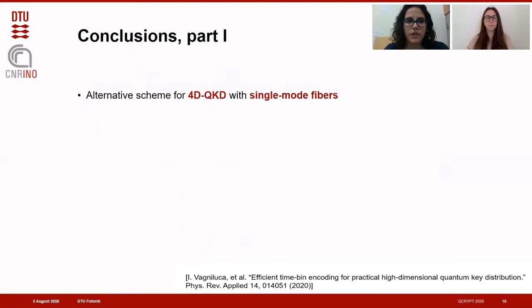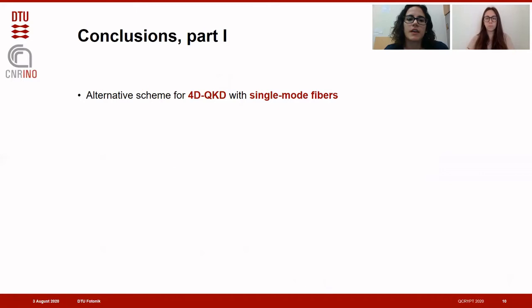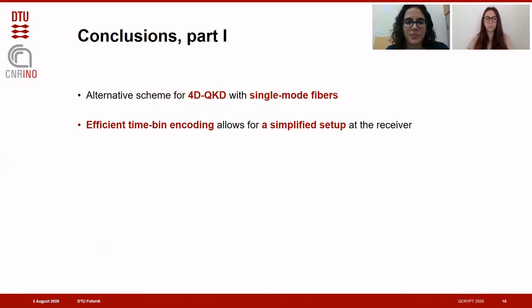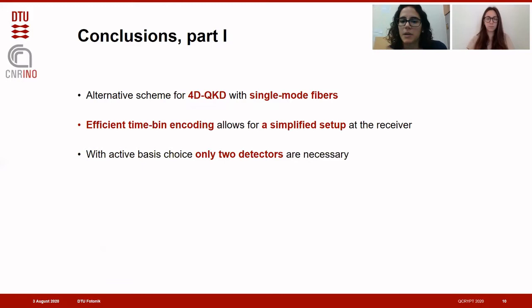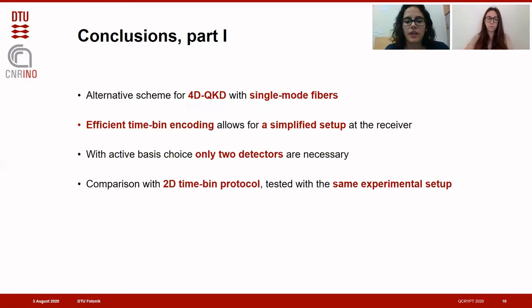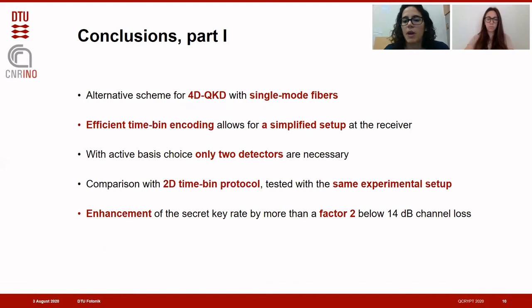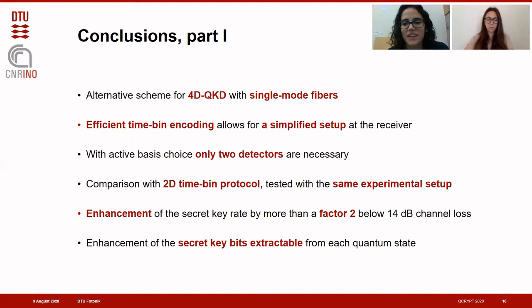In conclusion, we have presented an alternative scheme for four-dimensional QKD with single-mode fibers, showing that a more efficient time-bin encoding together with an active basis choice can simplify the experimental setup. We employed the same experimental setup to test a two-dimensional protocol as well, finding an enhancement of the secret key rate by more than a factor of two below 14 dB of channel loss, and an enhancement of the secret key bits per state for all experimental points.